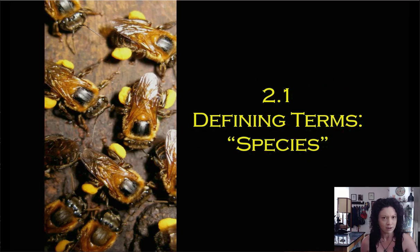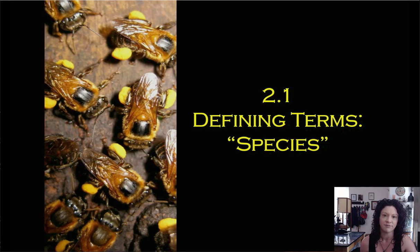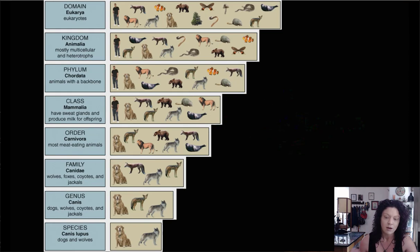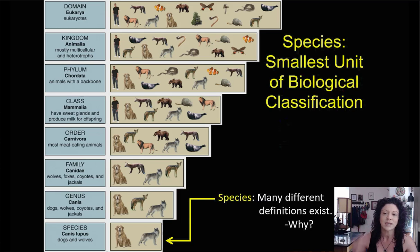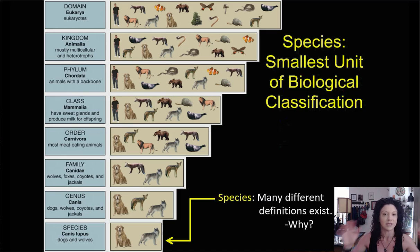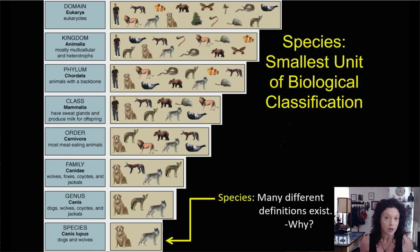There's some terminology that we need to get out of the way first. I'm big on defining terms to make sure that we are all understanding what we mean when we use some very specific language in science. The very first term we need to define is the word species. Species is formally defined as the smallest unit of biological classification. When we say the word species, what we're really saying is this is a specific, unique group of animals that have almost all the same traits and are all each other's closest relatives when compared to the rest of animal life.